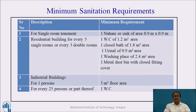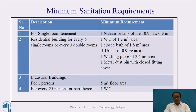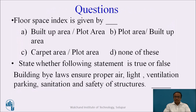Minimum sanitation requirements: for a single room, 1 tap or sink of area 0.9 meters by 0.9 meters. For residential buildings, for every 5 single rooms or every 3 double rooms: 1 WC of 1.2 square meters area, 1 closed bath of 1.8 square meters area, 1 urinal of 0.9 square meters area, 1 washing place of 2.4 square meters area, and 1 metal dustbin with a closed fitting cover. For industrial buildings, minimum floor area per person is 5 square meters, and 1 WC for every 25 persons or part thereof.